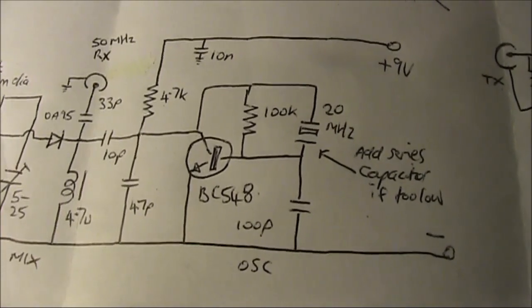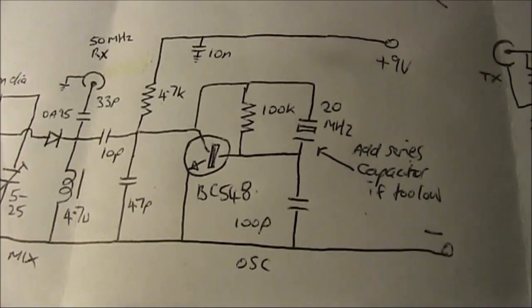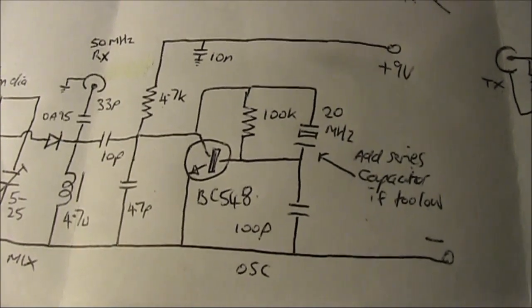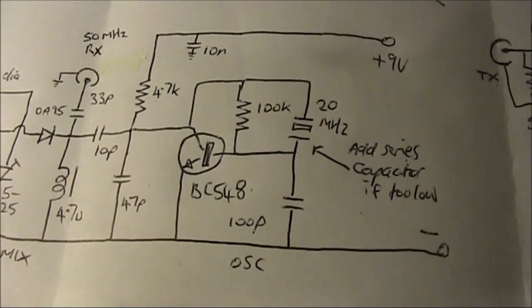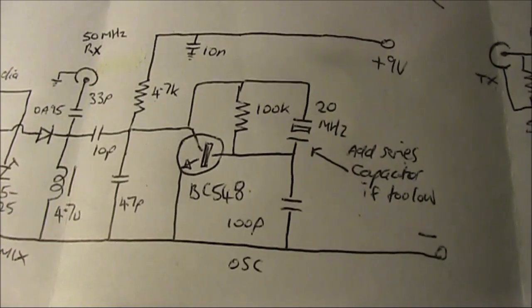If you have a general coverage receiver, you'll hear a signal on or near 20MHz. It's likely that it will be slightly off 20MHz if you build the circuit described here. It might be 5 kilohertz low.